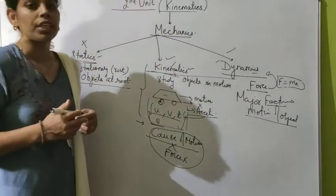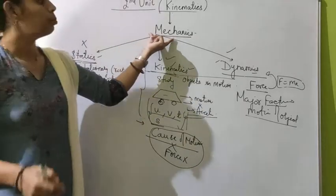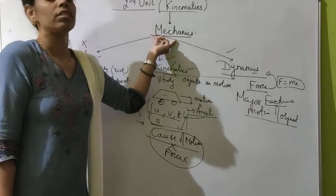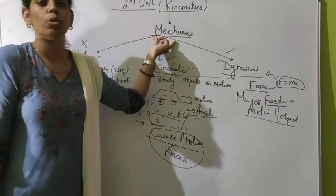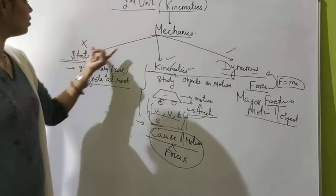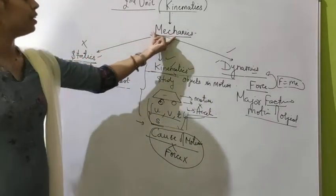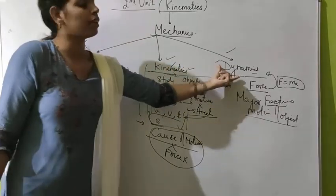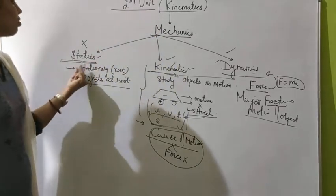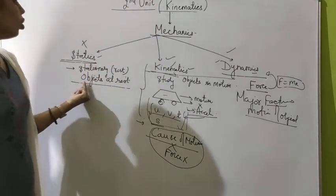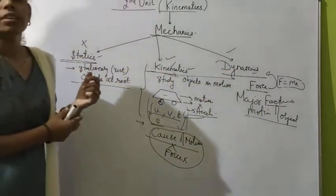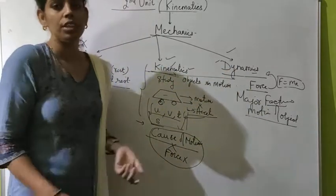To summarize: physics is the study of nature and natural phenomena. Mechanics is the study of objects and the state of objects — whether at rest or in motion. The three sub-branches of mechanics are statics, kinematics, and dynamics. Statics deals with objects at rest, while kinematics and dynamics relate to objects in motion.